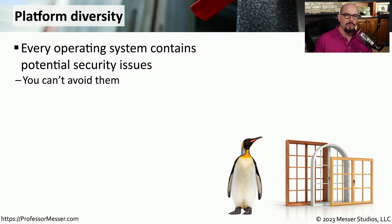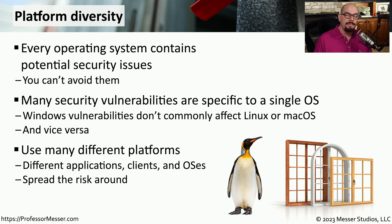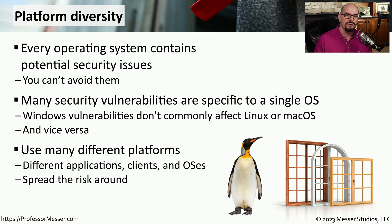Another type of resiliency is platform diversity. We know that operating systems have inherent vulnerabilities. Some of those vulnerabilities are known and we can patch them, but others simply haven't been discovered yet. However, it's very common that these vulnerabilities are specific to a type of operating system. For example, if you have vulnerabilities identified in the Windows operating system, it's unlikely those same vulnerabilities exist for Linux or Mac OS. So to minimize the potential for one single vulnerability causing a problem for all of your systems, it might make sense to have different operating systems used for different purposes — perhaps Linux and Windows in your data center and Mac OS and Windows on your clients. This allows you to spread that risk around and could limit exposure to one single vulnerability.